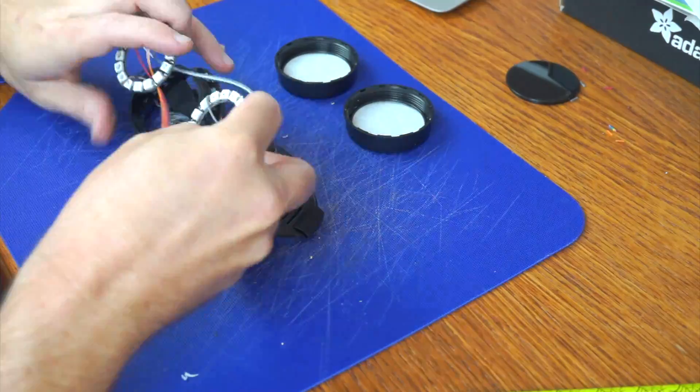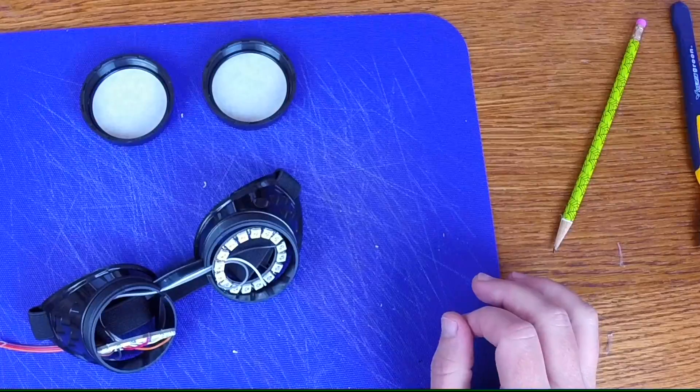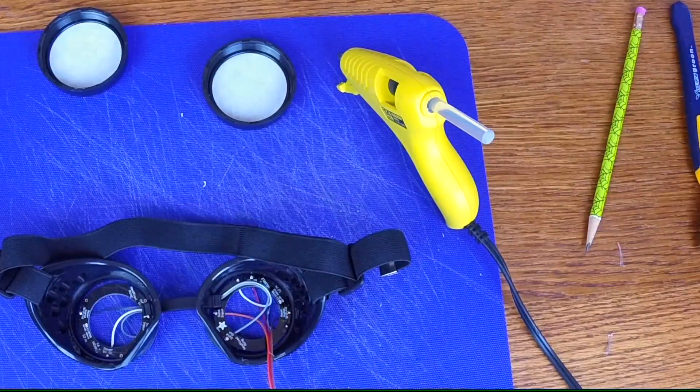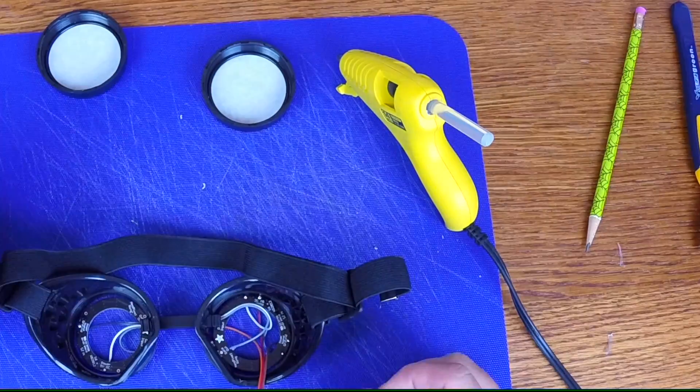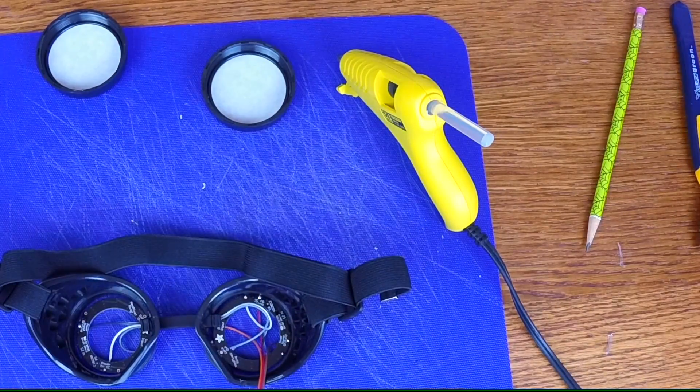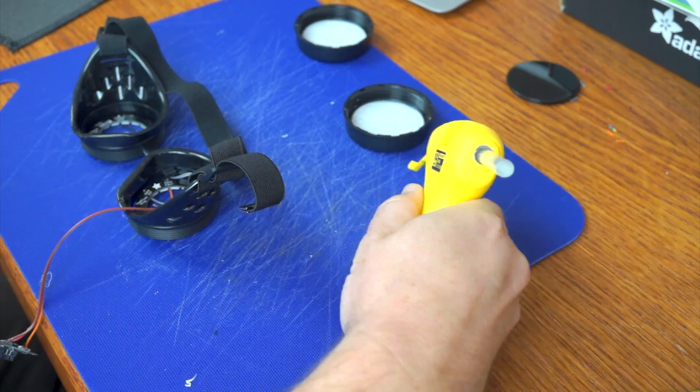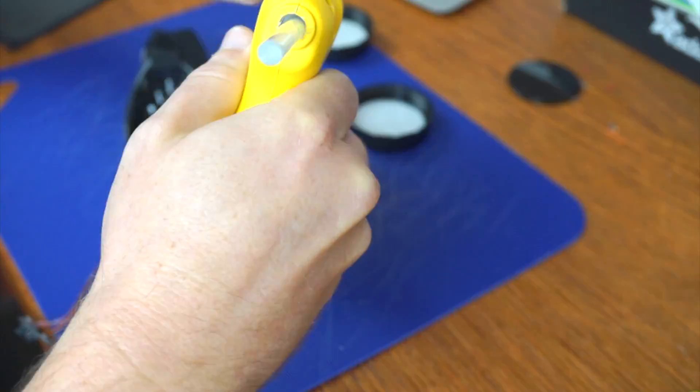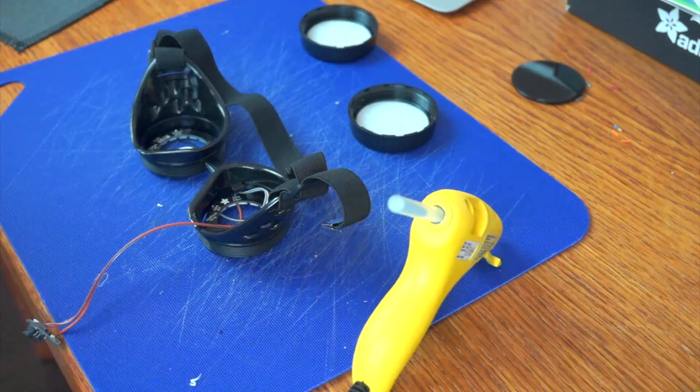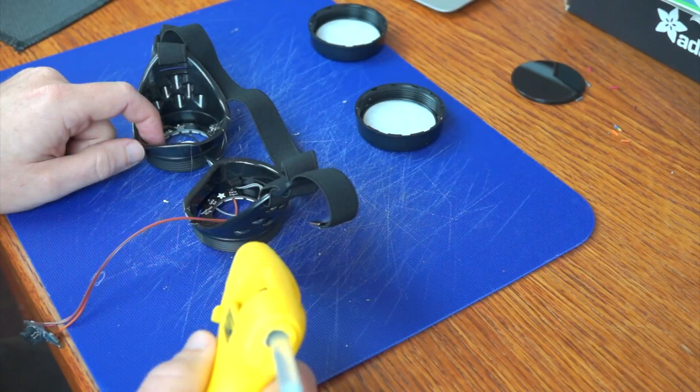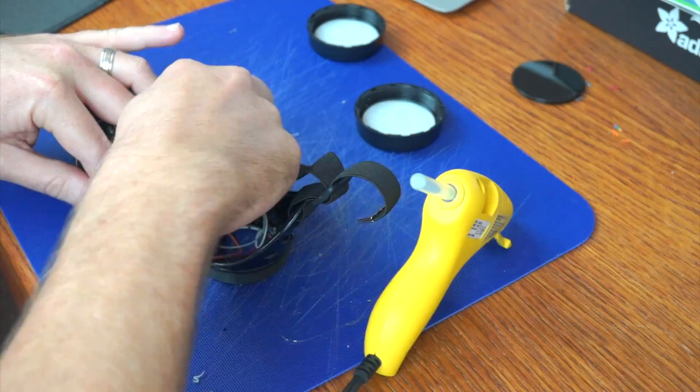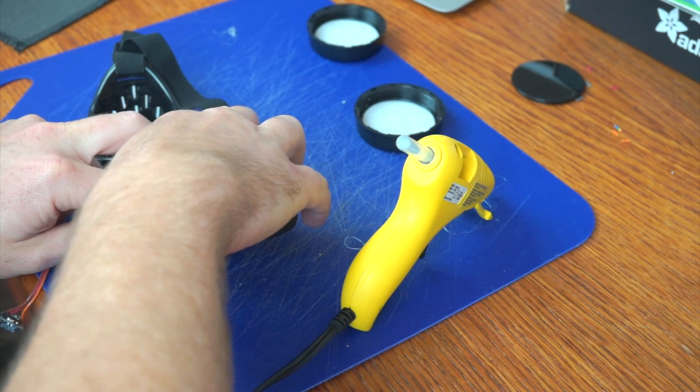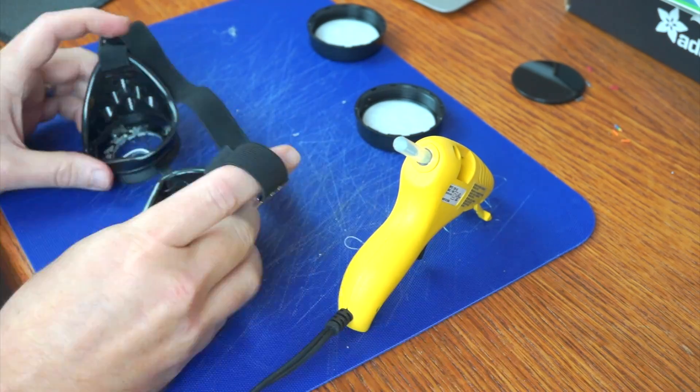At this point I am fitting the Neopixels through the front of the goggles, putting them in place, and then using hot glue to glue them. The rings fit well. It's not a pressure fit, but they fit in loosely and closely enough where a little bit of hot glue around the exterior is going to help bridge the gap between the interior of the goggles and the exterior ring of the Neopixel ring. It works out well.